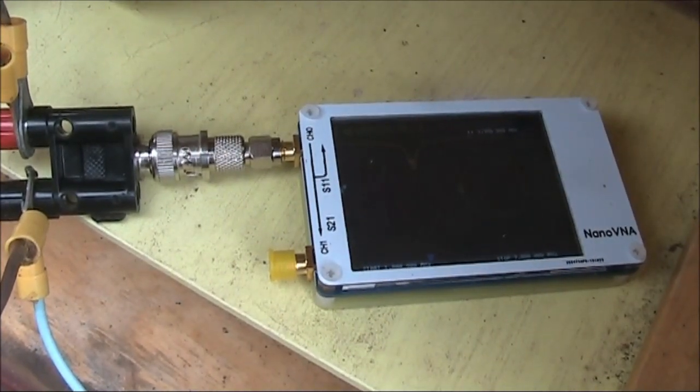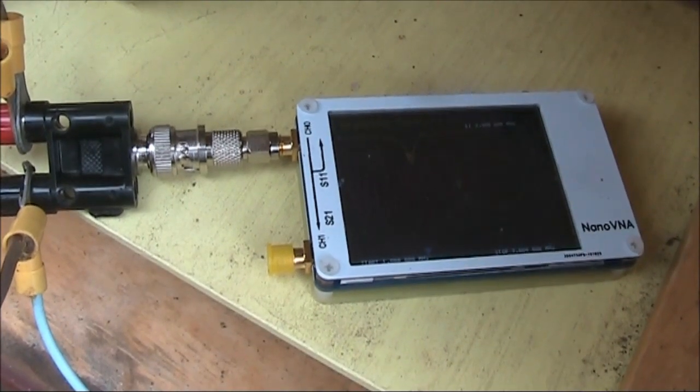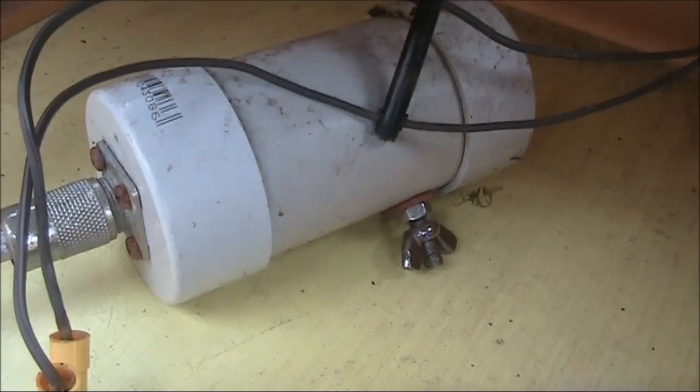There's about 10 meters of feed line dropping straight down, and in a little box at the base of the mast I have this balun.